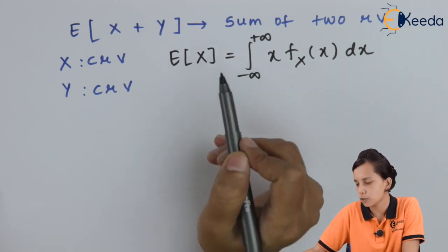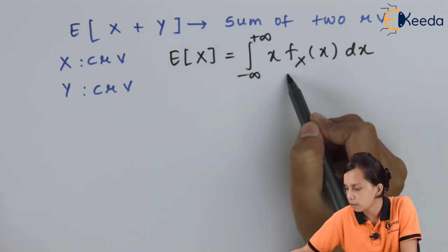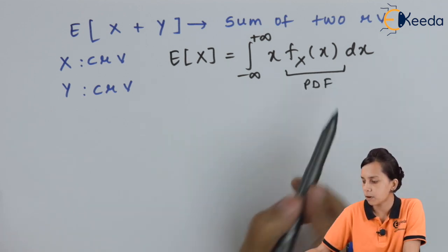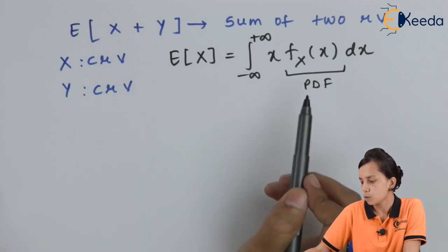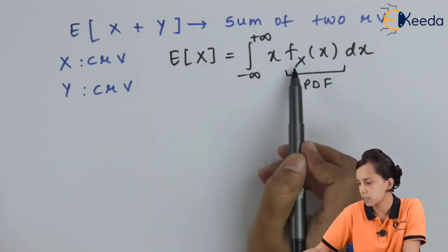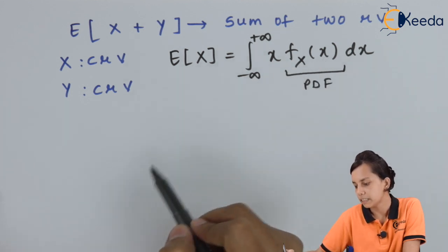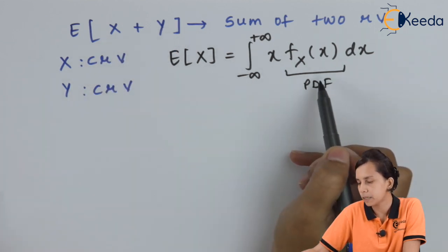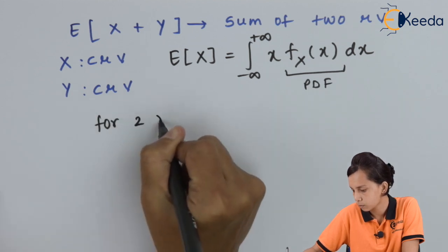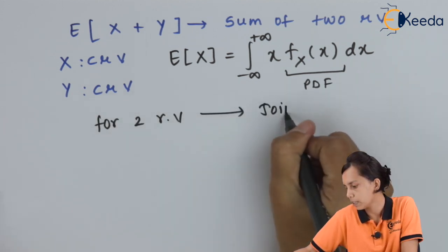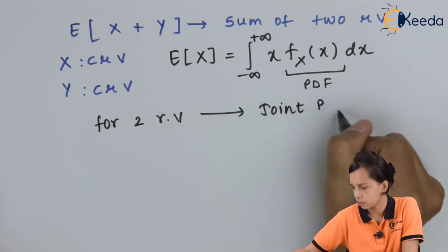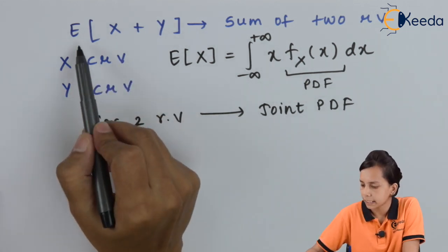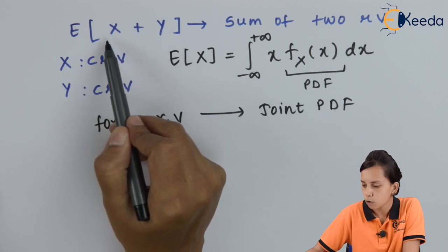If such a random variable consists of more than one random variable, that particular PDF changes. In this chapter we discussed about the PDF for a single random variable, where the PDF is f_X(x). But when we are interested in finding the mean for two random variables, this PDF will be replaced by the joint probability density function.